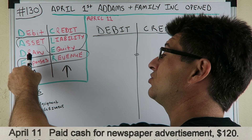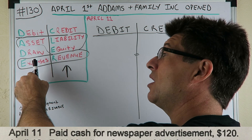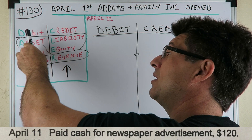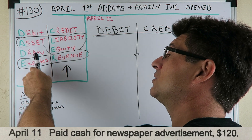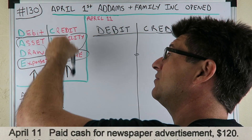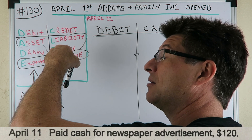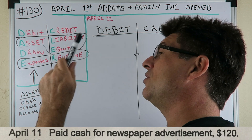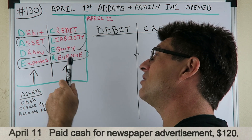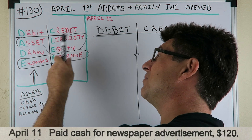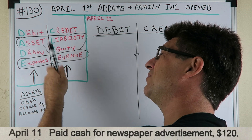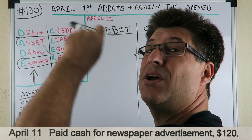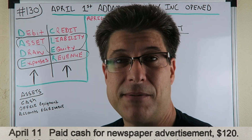If Asset, Draw, or Expense are going up in value, you debit them. If Asset, Draw, or Expense are decreasing in value, you credit them. If Liability, Equity, or Revenue are increasing in value, you credit them. If Liability, Equity, or Revenue are decreasing in value, you debit them.